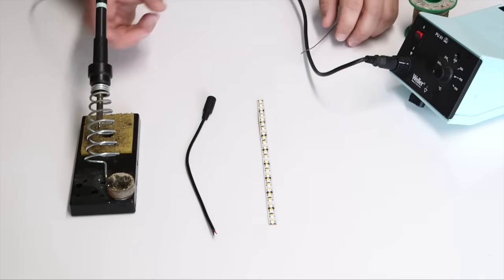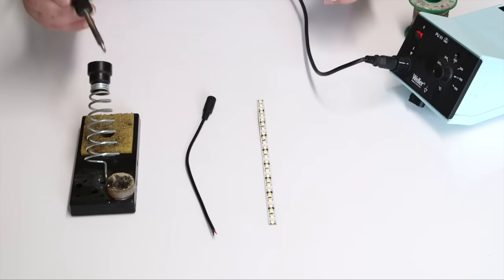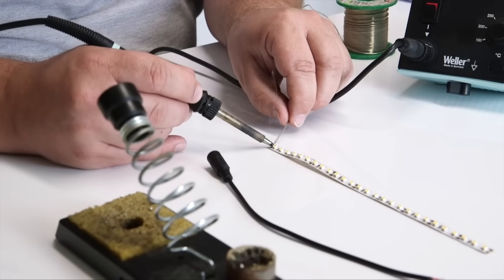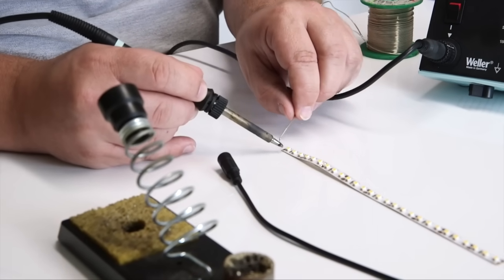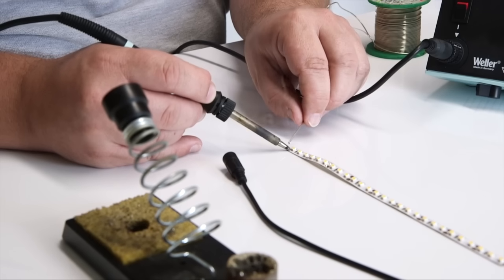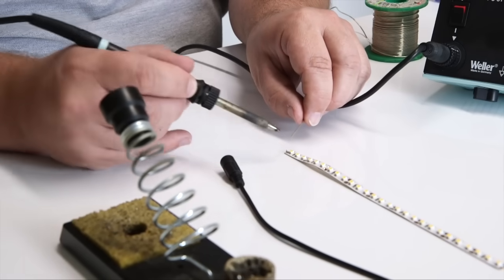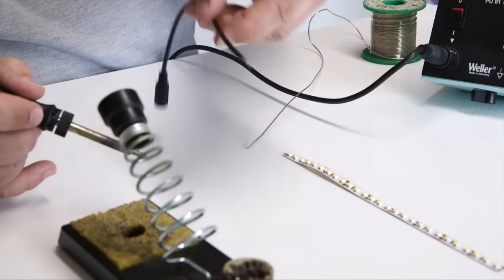We will now briefly look at soldering onto LED strip. Soldering is our recommended method as it provides a more secure connection. Here we are soldering our order code C4229, the little 2.1mm input socket cable, onto a length of single colour LED strip.